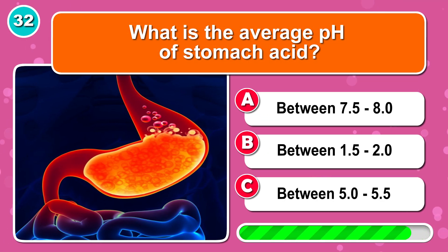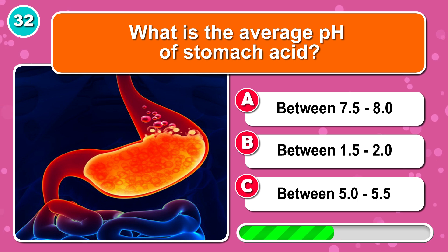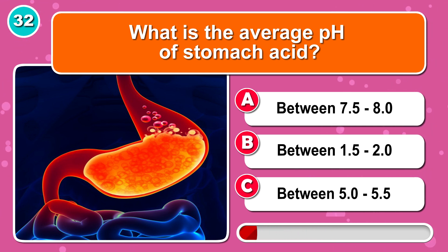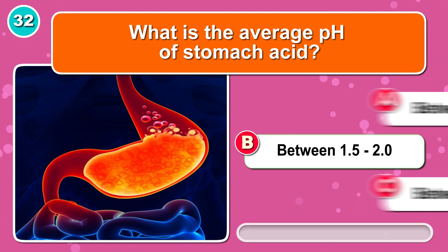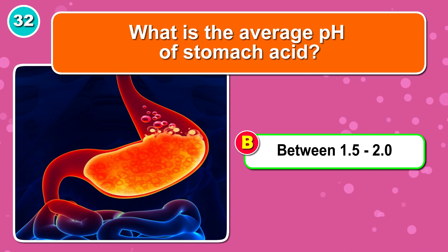What is the average pH of stomach acid? It's B: between 1.5 and 2.0.